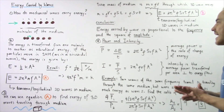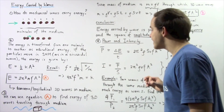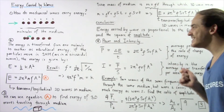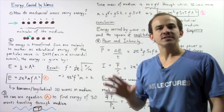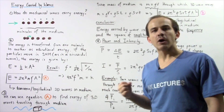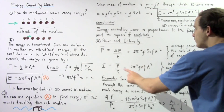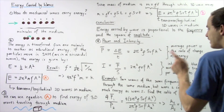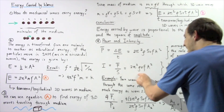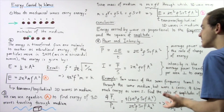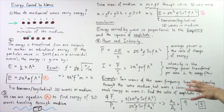Intensity, given by uppercase I, equals the average power divided by the area — the cross-sectional area of the medium through which the energy is transferring. If we take the power and divide by the cross-sectional area, the S terms cancel, and we are left with: intensity equals 2π² multiplied by density of the medium, multiplied by velocity of the propagating wave, multiplied by frequency squared, multiplied by the square of the amplitude.